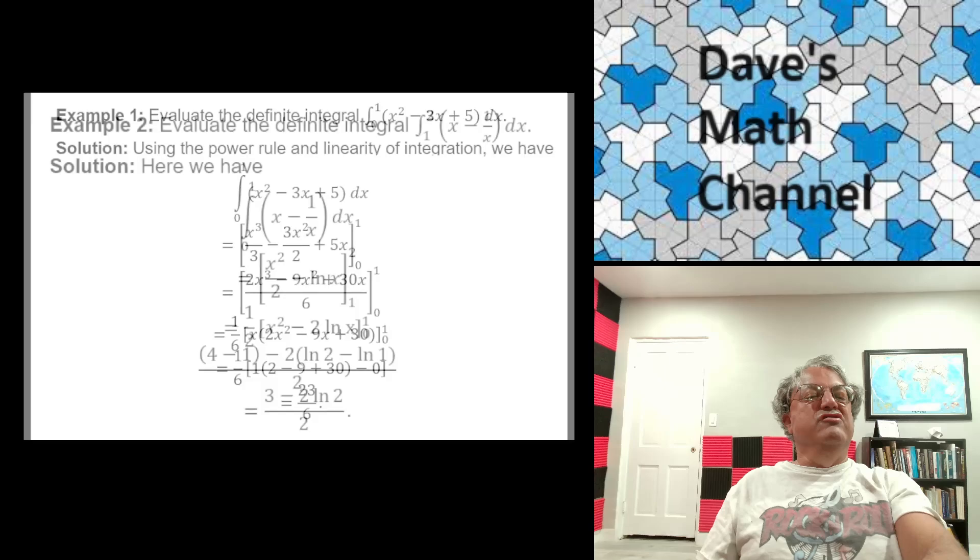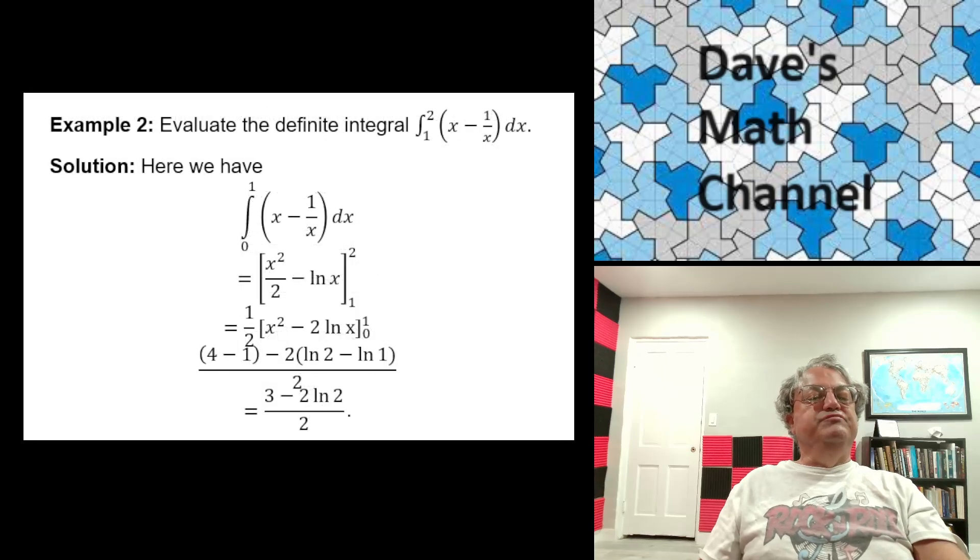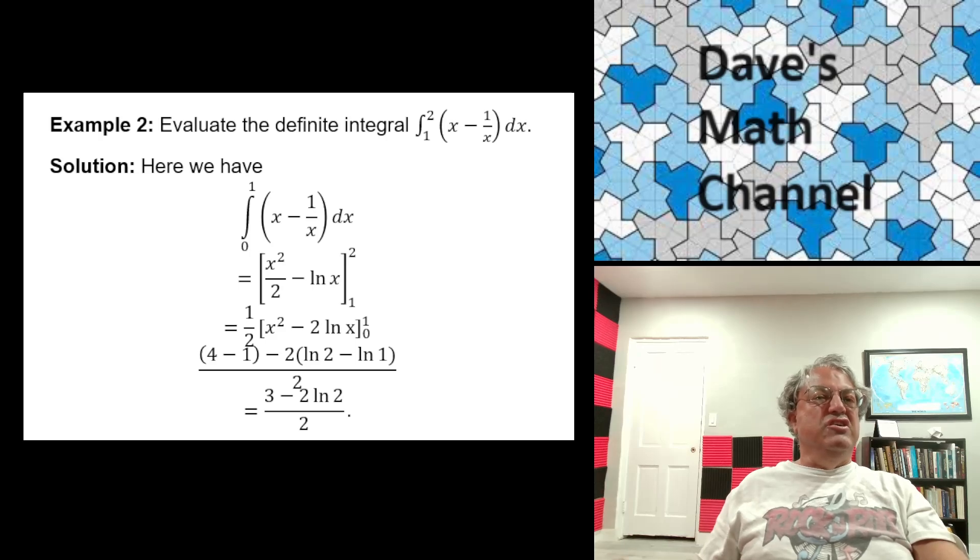Let's look at another example. We're given the definite integral of x minus 1 over x, x going from 1 to 2. This time we can use the power rule on the first term x. That just gives us x squared over 2 when we integrate it. But we can't use it on 1 over x because that's the exception. Remember that when n equals minus 1, we can't use the power rule.